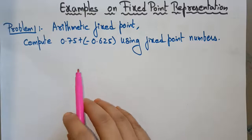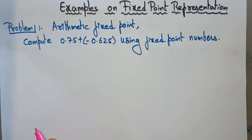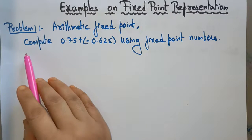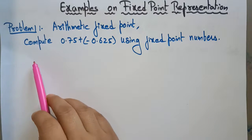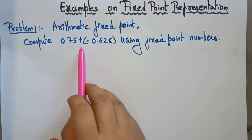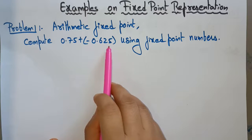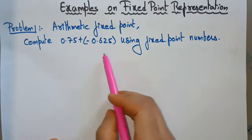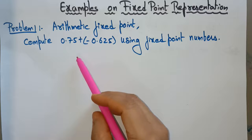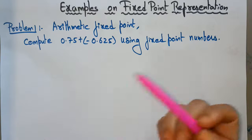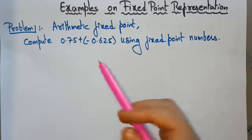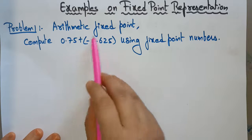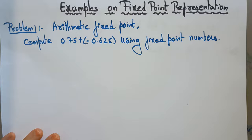The first problem I have taken is an arithmetic fixed point representation, meaning I want to do an arithmetic calculation. The question given is: compute 0.75 plus minus 0.625 using fixed point numbers. These are decimal numbers in dot format, which is fixed point format. There is a positive number and a negative number, and we need to perform the arithmetic operation.